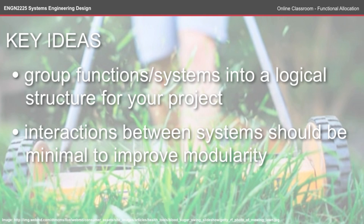To recap the key ideas from the functional allocation: first, group your functions and subsystems into a logical structure for your project — that's likely to be different for every project — and the interactions between the systems should be minimal to improve modularity. Make sure you check out the reading for this online classroom and complete the self-tests available on WADL. See you next time.